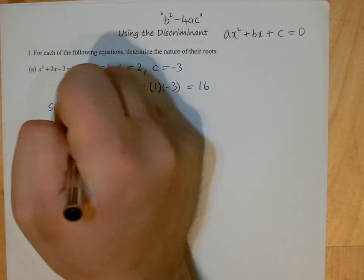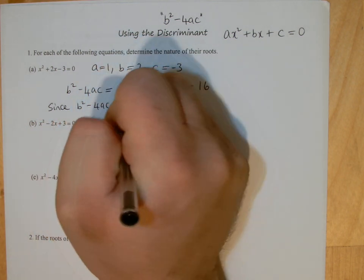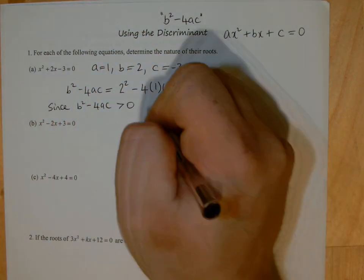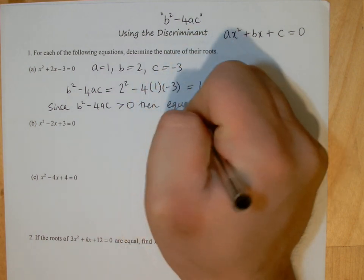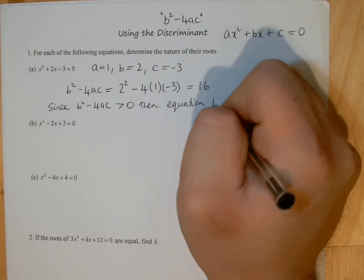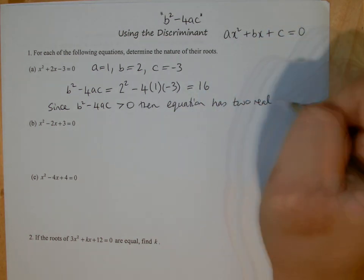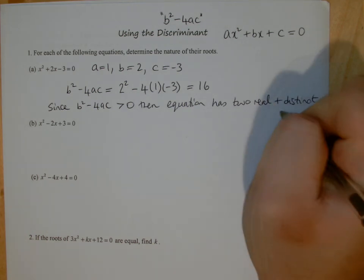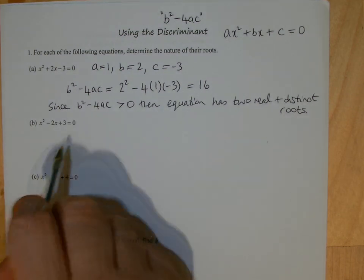So we can say, since b squared minus 4ac is positive, then the equation has two real and distinct—they are different. Distinct means different, remember. So two distinct and real roots.